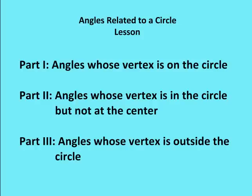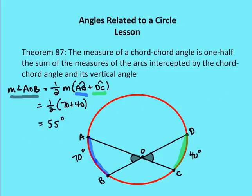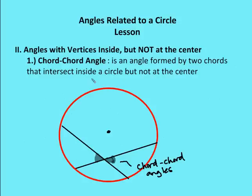So let's talk about angles whose vertices are in the circle, but not the center of the circle. Let's take a look at the only example of that — it would be a chord-chord angle. I have two chords here. We can label this A, B, C, and D. So my two chords intersect inside the circle, but not at the center of the circle. A chord-chord angle is formed by two chords that intersect in a circle, but not at the center.